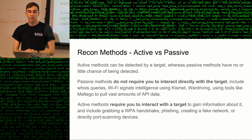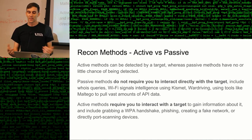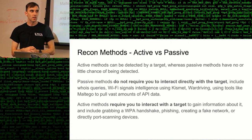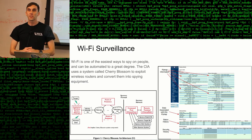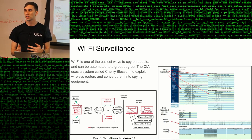Active methods require you to interact with the target to gain information and they can include things like grabbing a WPA handshake that would allow you to break into a network, phishing in order to get credentials, creating a fake network in order to unmask users and see if they'll connect so you can track their MAC address, or directly port scanning devices or websites. That means you're actually reaching out and touching the server they own or going to the business they work at — that's a lot more active, and the risk of getting caught is significantly more. Wi-Fi surveillance is one of my favorite methods of reconnaissance.